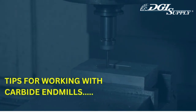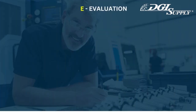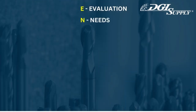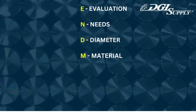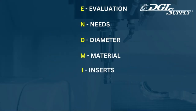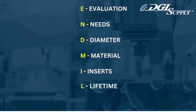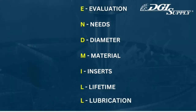Here are some things to remember when working with carbide end mills. Evaluation: assessing the end mill's performance and suitability for a specific application. Needs: understanding the specific requirements of the material and application to select the right end mill. Diameter: the width of the cutting edge, which impacts the material removal rate and tool stability. Material: considering the compatibility of the end mill with the workpiece material, such as hardness and machinability. Inserts: in some end mills, replaceable cutting edges that can improve tool life and performance. Lifetime: the overall service life of the end mill, influenced by factors like tool material, coatings, and maintenance. Lubrication: ensuring proper cooling and lubrication to minimize heat buildup and extend tool life during machining.